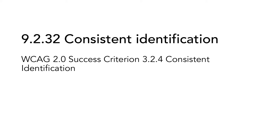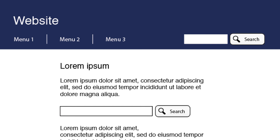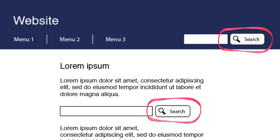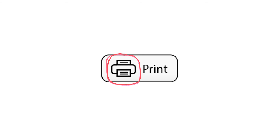9.2.32 Consistent Identification is based on WCAG 2.0 Success Criterion 3.2.4 Consistent Identification. Users must be able to recognize functional components in different webpages. This means, for example, that a button should not be labeled 'search' on one page and 'find' on another. This success criterion is important for several user groups, for example users with cognitive disabilities. Also, screen reader users often rely on component identification to orient themselves between webpages. The criterion also relates to text descriptions of non-text content. So if the same icon is used on several pages, for example a print icon, the text alternatives must be consistent on the different pages.